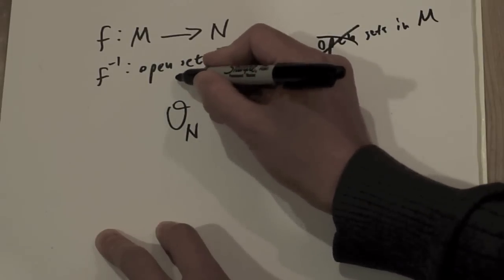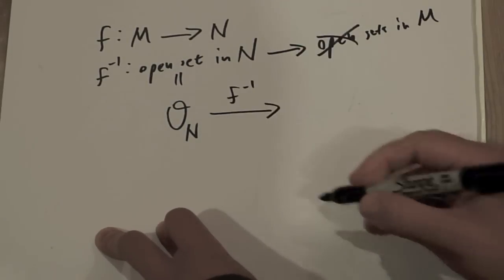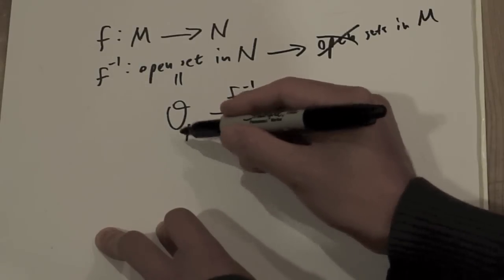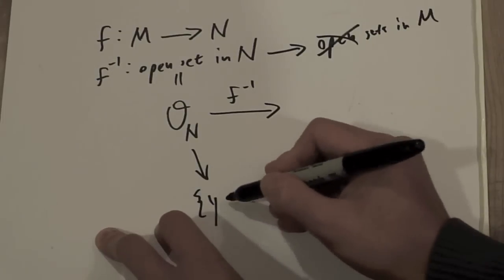That's what this guy is right here. And we have this map, F inverse. And if we ask, is this set over here, if we ask if it's open, we'll get an answer. It'll say yes or no. I mean, of course, if it's open, the answer is always yes.